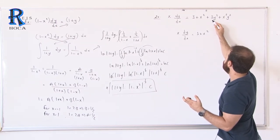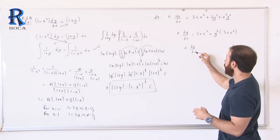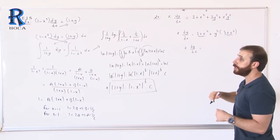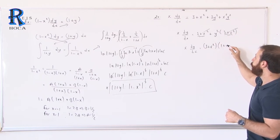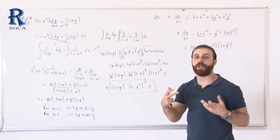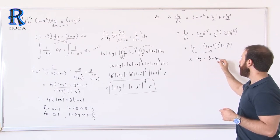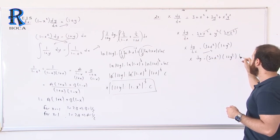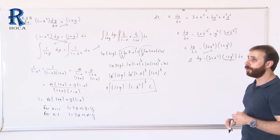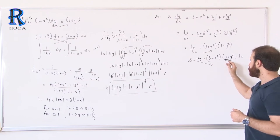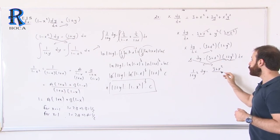Looking at the equation: x dy/dx equals (3 plus x squared)(1 plus y squared). We see that y squared is a common factor on one side and (3 plus x squared) on the other. Sending dx to the right and cross-multiplying: 1 over (1 plus y squared) dy equals (3 plus x squared) over x dx. Now in front of dy we have only y, and in front of dx only x — this is separable.